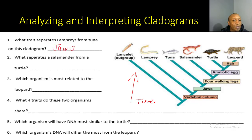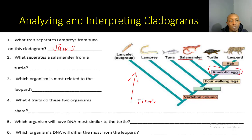Number two: what separates a salamander from a turtle? Here's a salamander and here's a turtle. Both share vertebral column, jaws, and four walking legs. However, amniotic egg comes after the salamander on the cladogram, and the turtle would have the amniotic egg. So the trait that separates a salamander from a turtle is the amniotic egg.